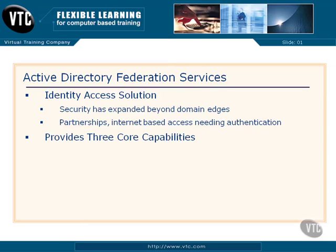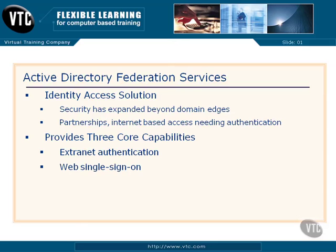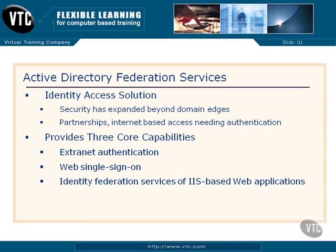There are three core capabilities that Federation Services provides. First, extranet authentication — someone from outside our internal network that we do business with. We set up a Federation Services connection to them, and they have Federation Services running, and we actually authenticate their folks into our network. Second, web single sign-on, one of the most powerful features, allowing single sign-on services with our partners as we move through the web. Third, identity federation services for IIS web-based applications.